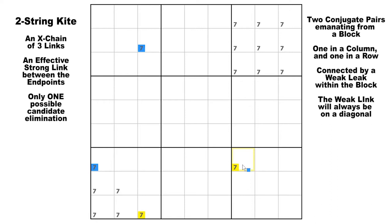You can start on either end and the net result is exactly the same, like a mirror image. The two strong links are in column three and in row seven, and the weak link — the middle link — lies entirely within block seven. There is an effective strong link between the two endpoints, which means at least one of them must be true.